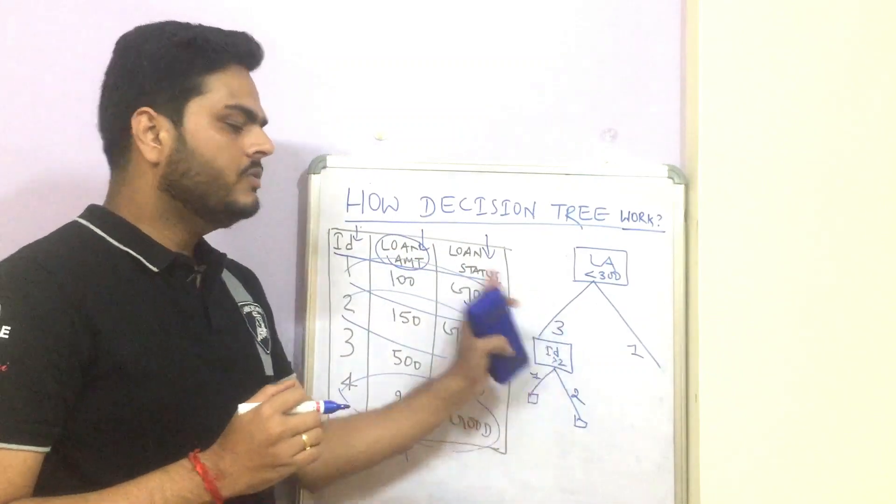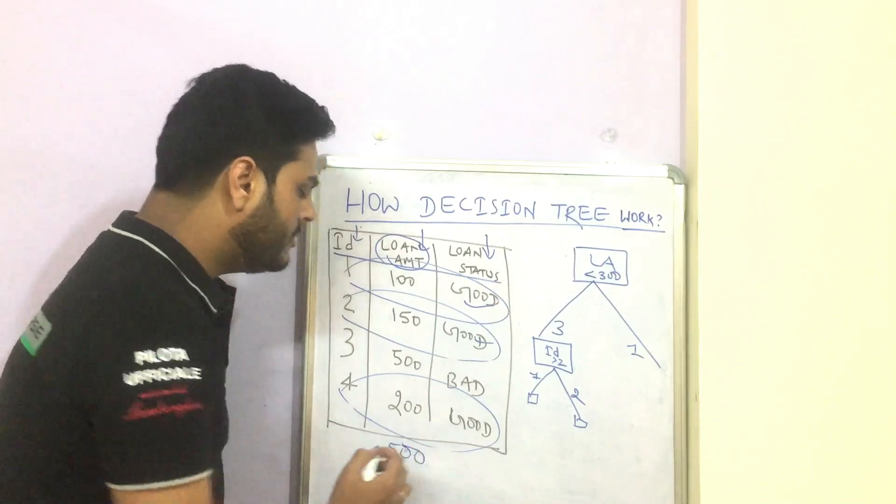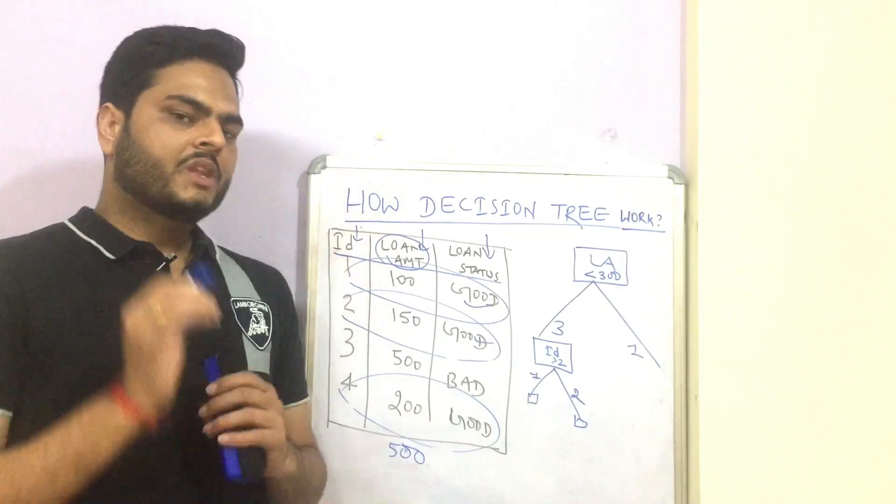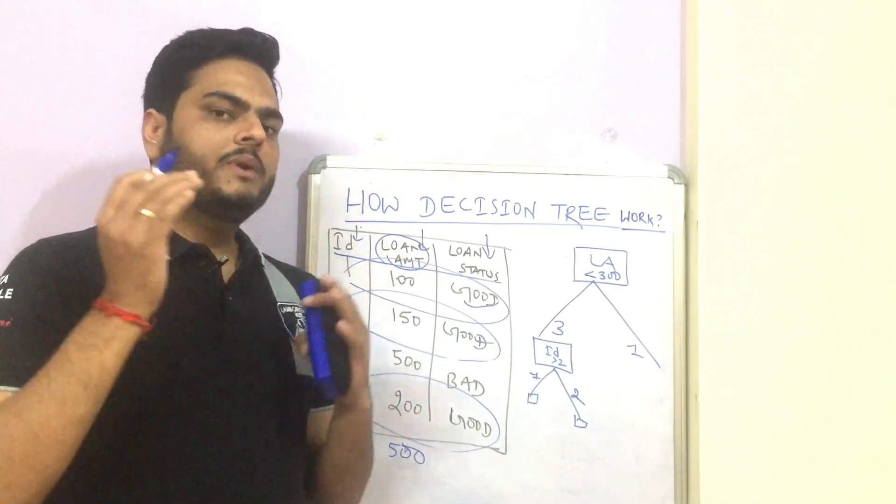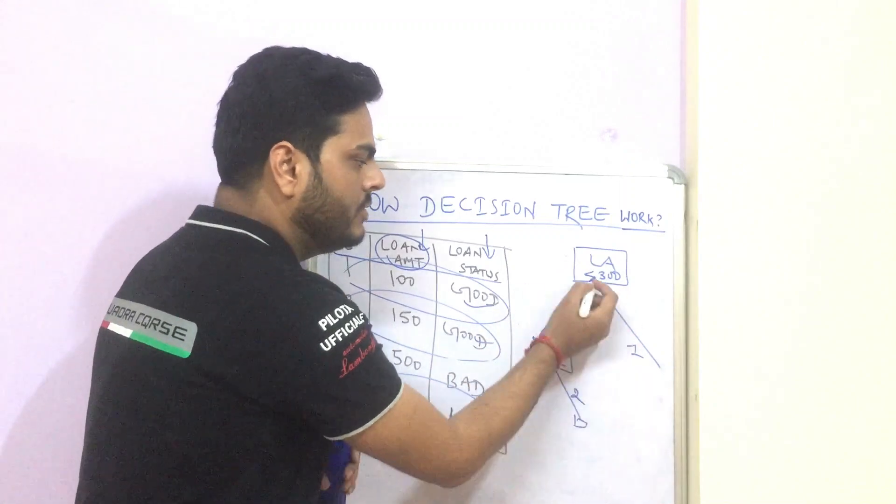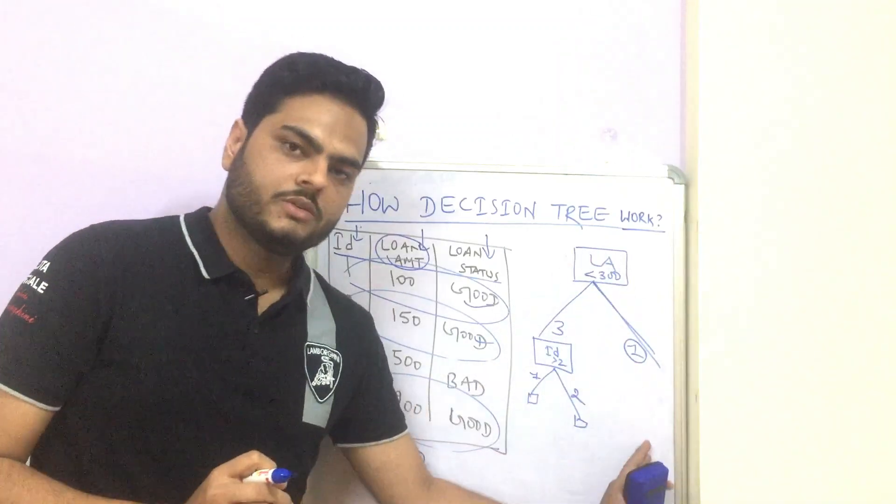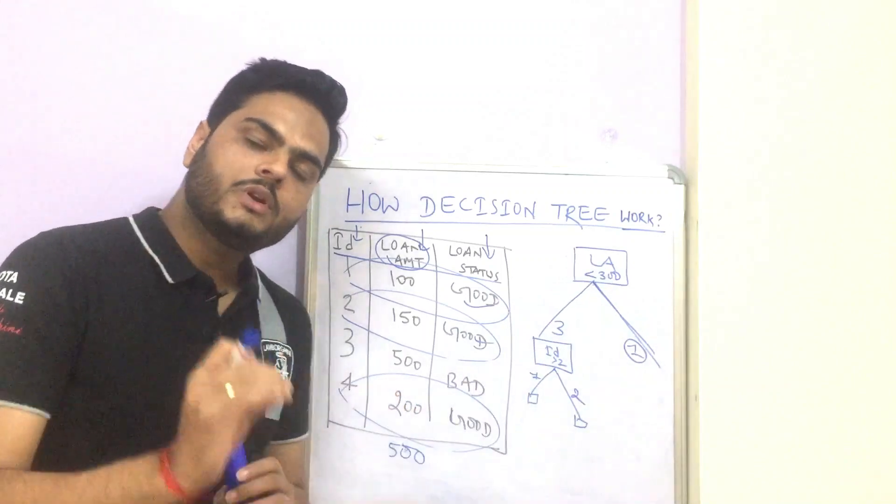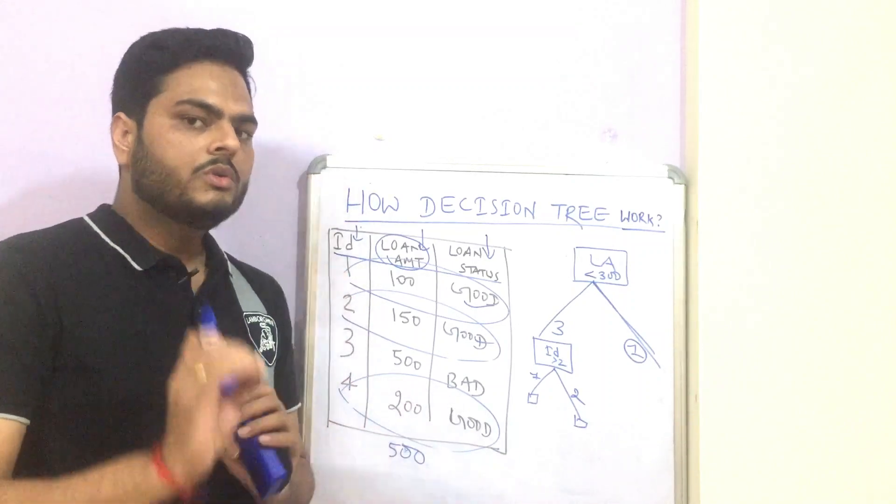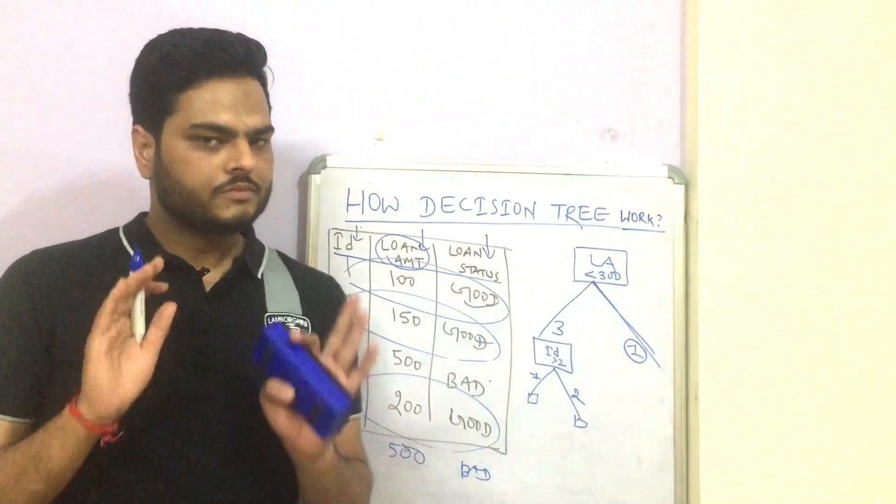So how the prediction will happen is tomorrow, I ask to this model, hey, can you tell me there is a loan amount of 500? Can you tell me whether that loan amount will turn out to be a good loan or bad loan? Decision tree will tell me, okay, let me look at my tree and I'll tell you. So it will come here. It will check which side of the tree it will go in. This side, no, this side, it will go in. So this side, only one record is there. It will check the majority vote in that branch. I repeat it guys. Majority vote in that branch, which means in this branch, whether there are more good loans or more bad loans. In this case, there is only one record, which is bad. Hence, the prediction happens to be bad.